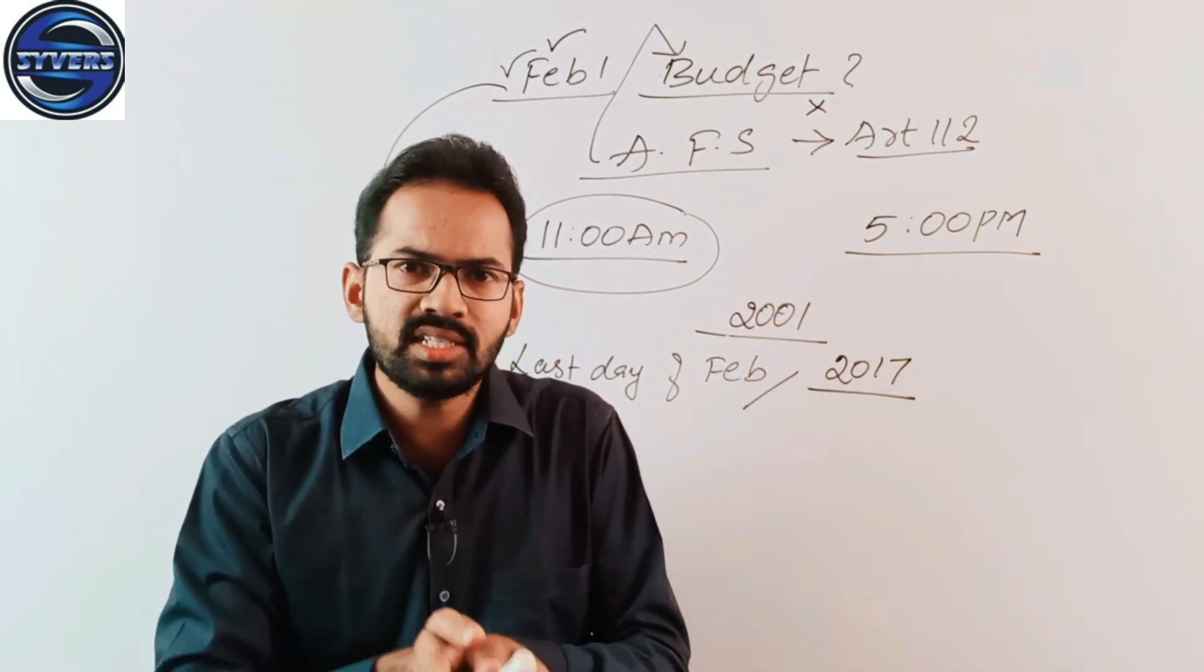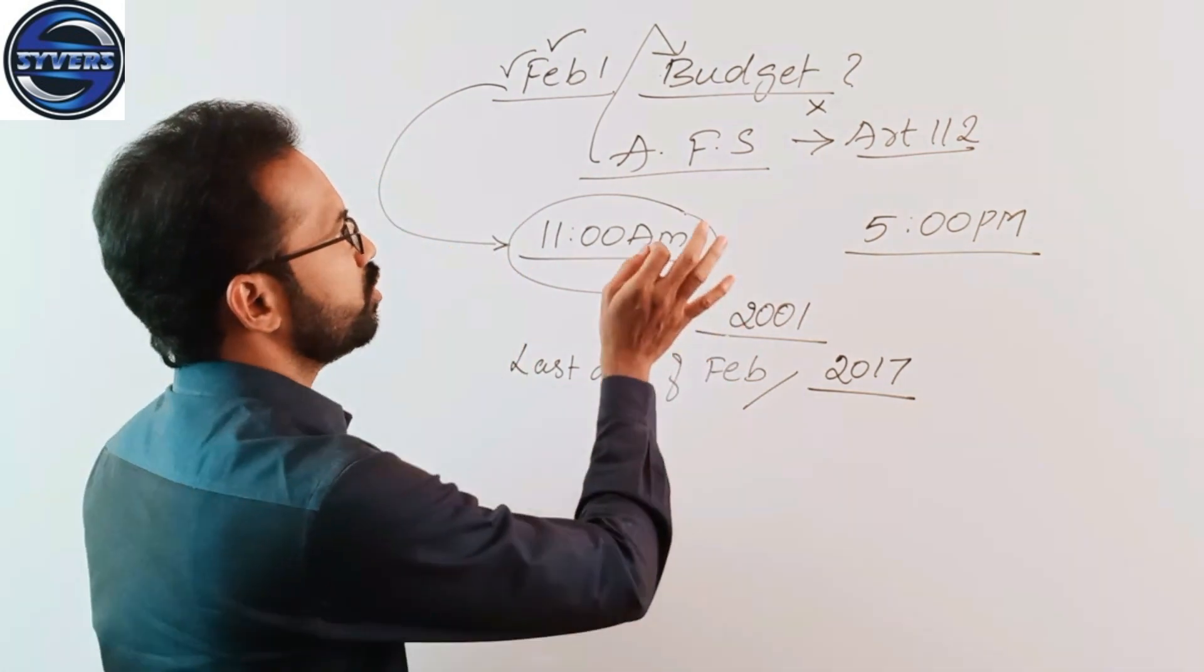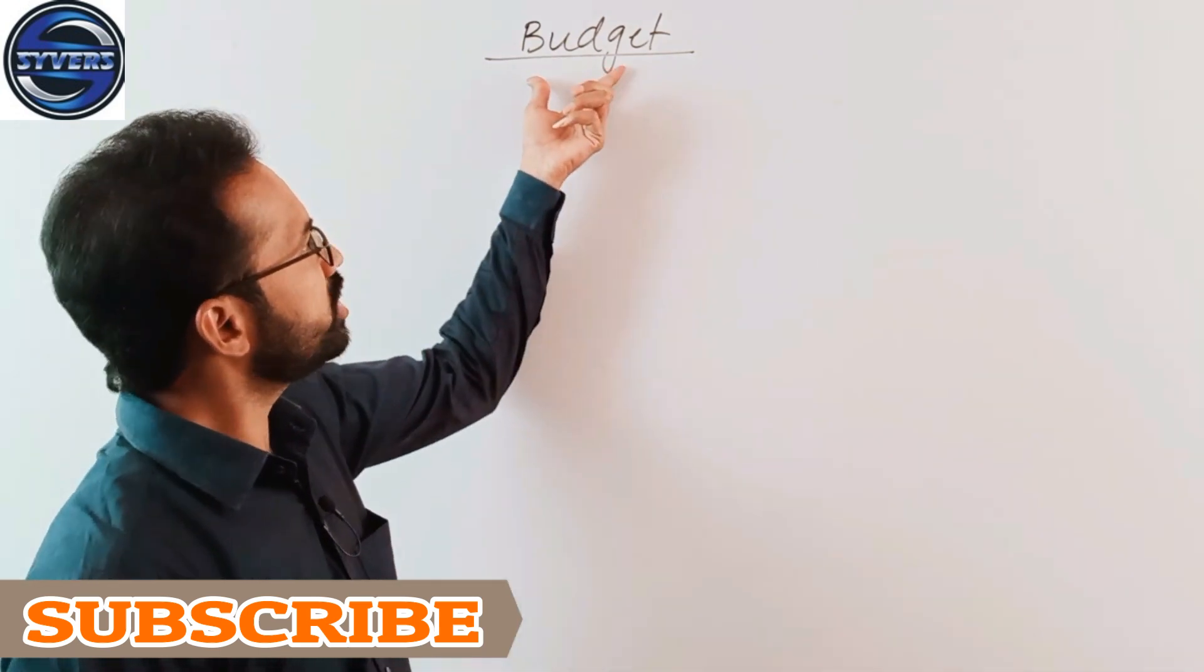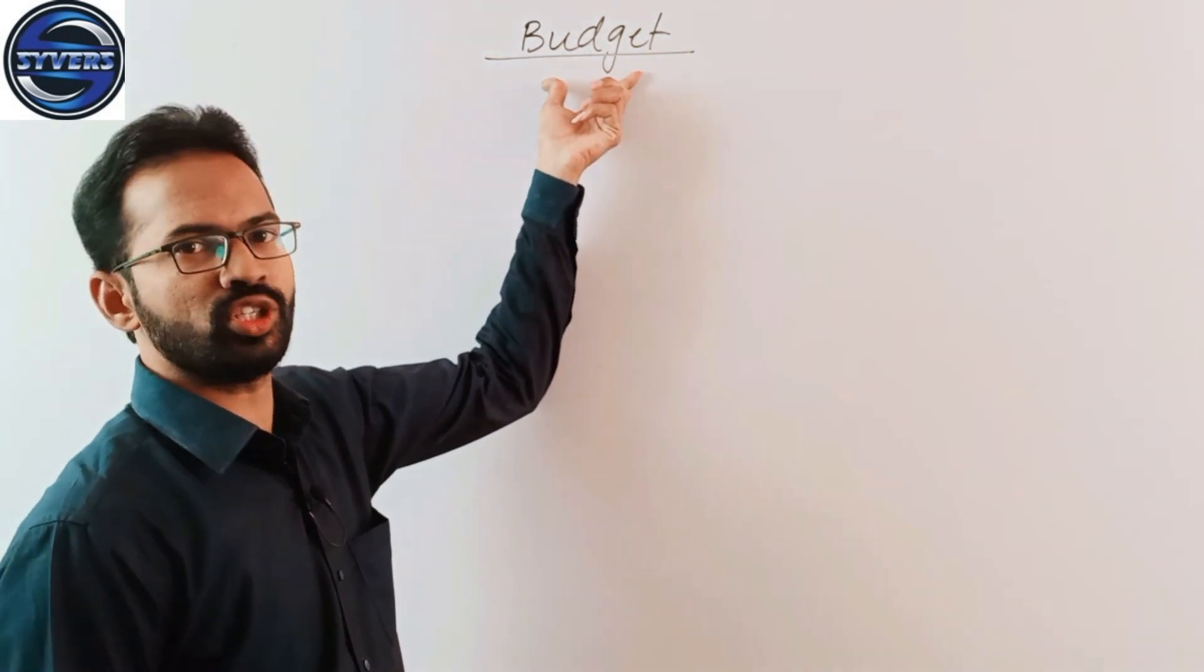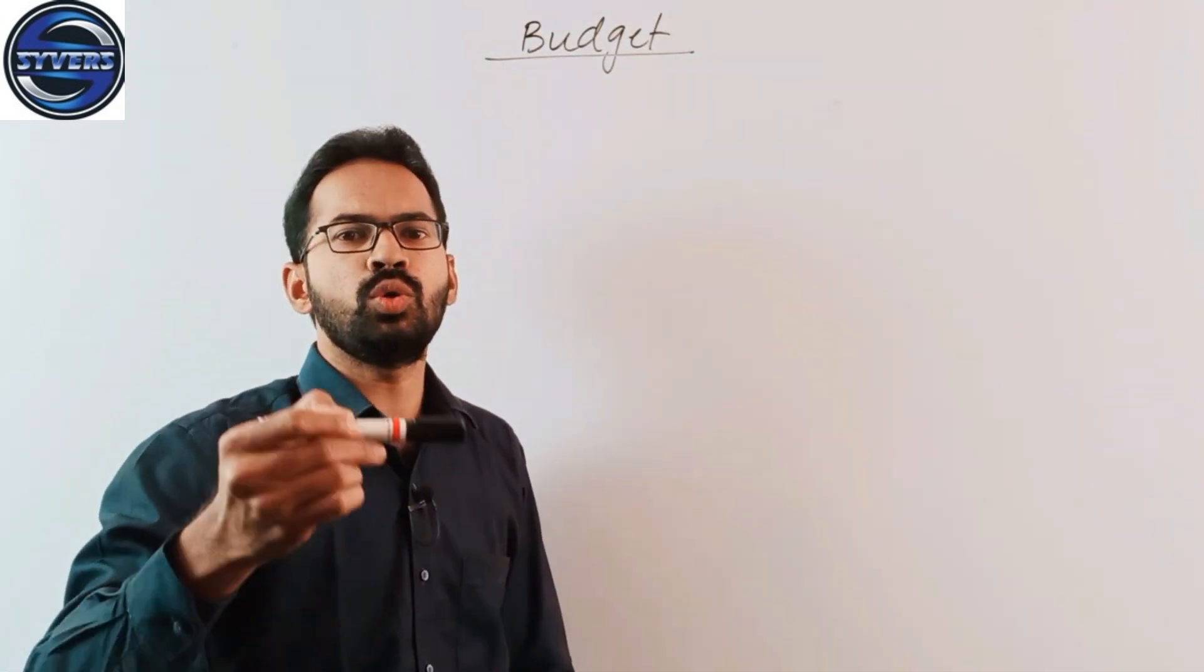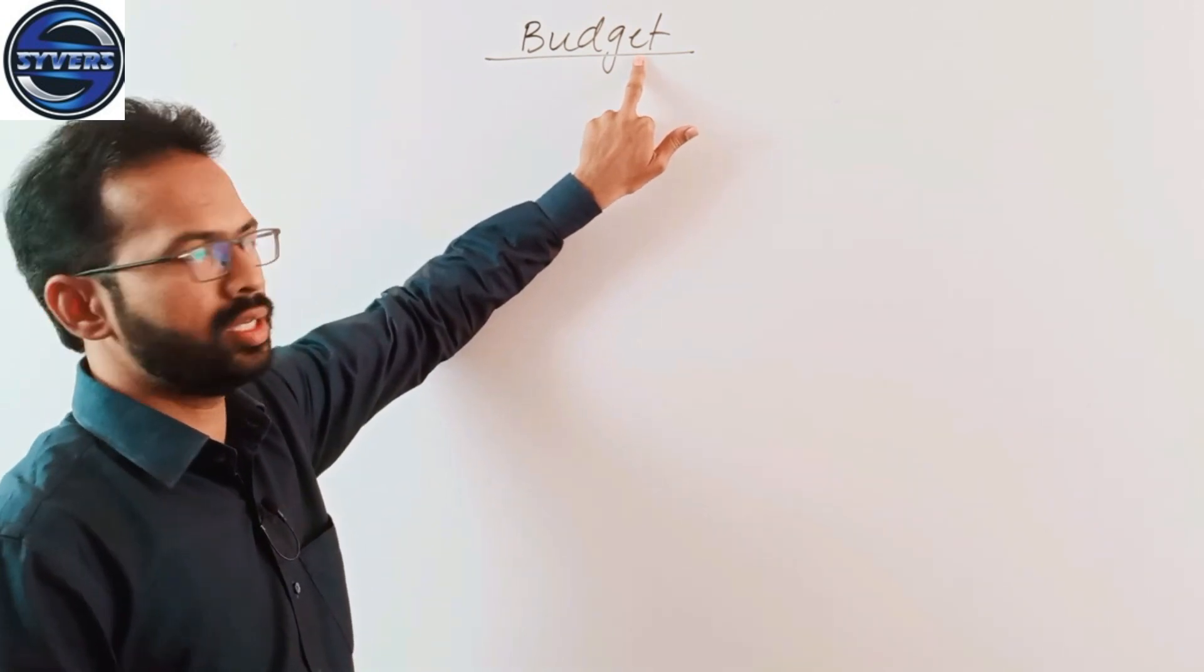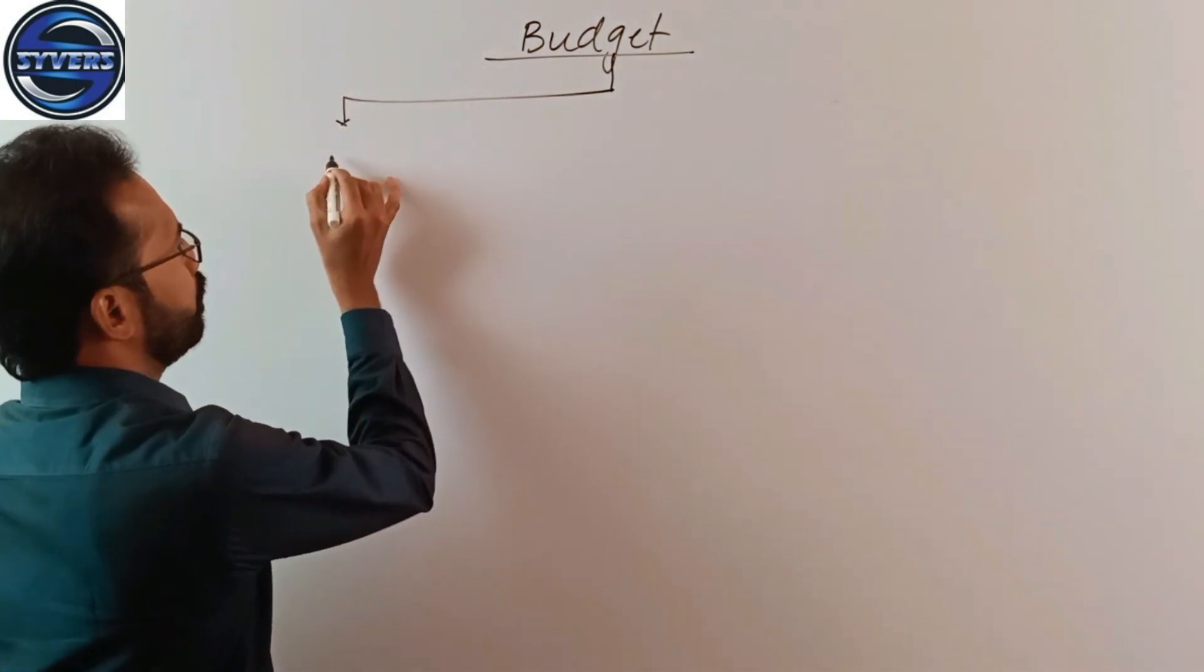Now let's look at types of budgets. Receipts and expenditures play a vital role in the budget. Budget is an estimation, it is not a fact. Budget talks about the estimations for the coming year, how India is going to earn money and how India is going to spend that money.